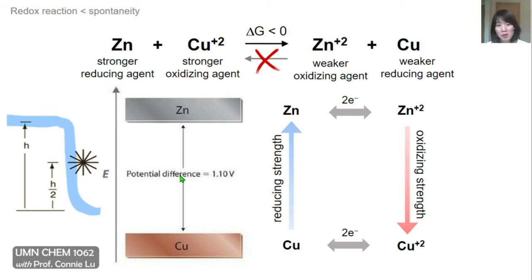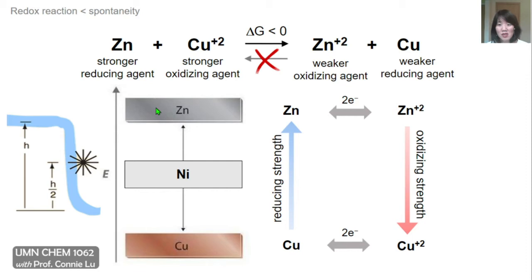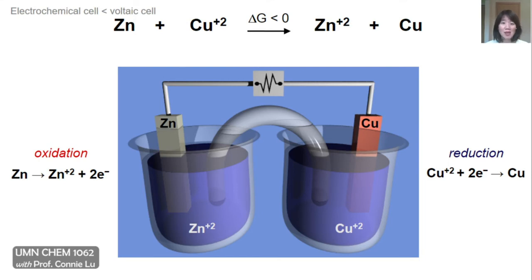The same is true for metals and their potential to transfer electrons. Halfway between zinc and copper is nickel metal. Just like the potential energy analogy, the transfer of electrons from zinc to nickel plus two is approximately half the potential of transferring electrons from zinc to copper plus two. So if we were trying to extract work from these redox reactions, we would get approximately double the work from transferring electrons from zinc to copper plus two compared to zinc to nickel plus two.